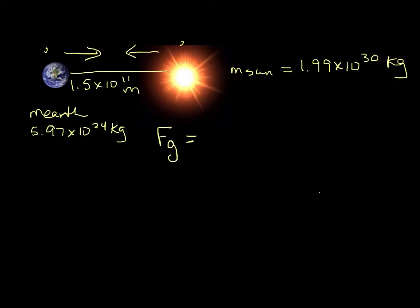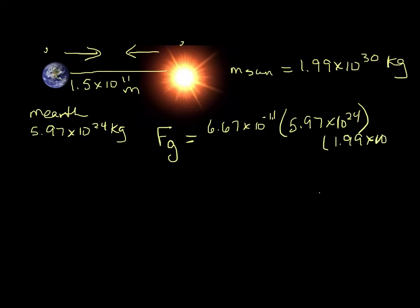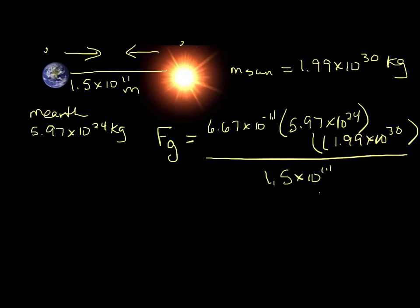FG equals 6.67 times 10 to the minus 11. The mass of the Earth is 5.97 times 10 to the 24 kilograms — not a number you need to memorize, it would be given to you. The mass of the Sun is 1.99 times 10 to the 30th kilograms, again not a number to memorize. The distance between them is 1.5 times 10 to the 11 meters, and we square that. Crunching all those numbers, we get 3.52 times 10 to the 22nd Newtons — a much larger force than before.